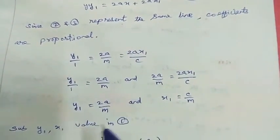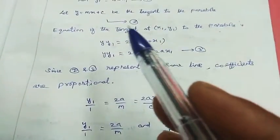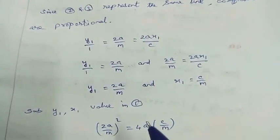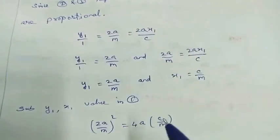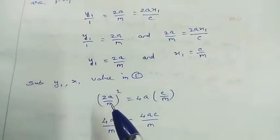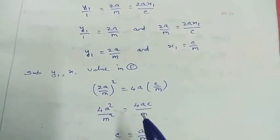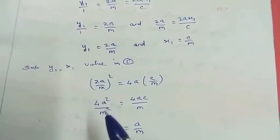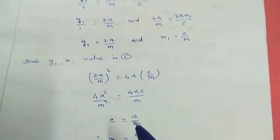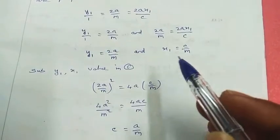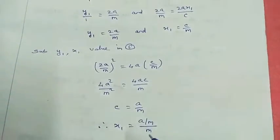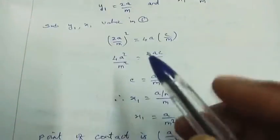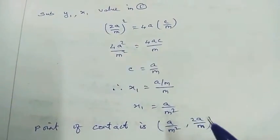Substituting x1 and y1 values in equation number 1: y1 square equal to 4a x1. So 2a by m whole square equal to 4a into c by m. This gives 4a square by m square equal to 4ac divided by m. After simplification, c equal to a by m. Substituting c back: x1 equal to a by m square, y1 equal to 2a by m. Point of contact is a by m square, comma 2a by m.